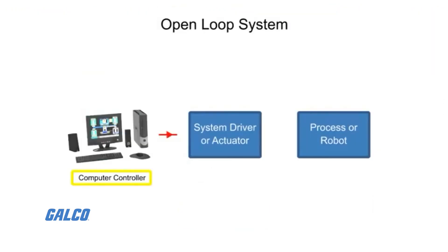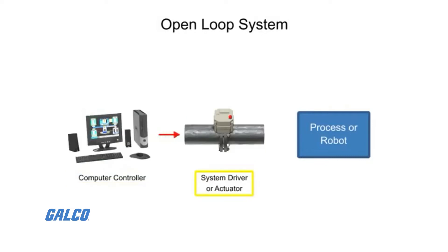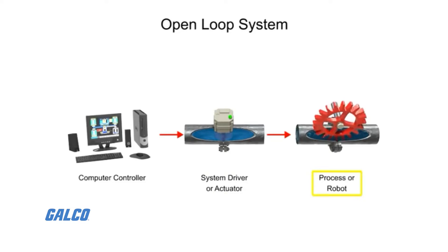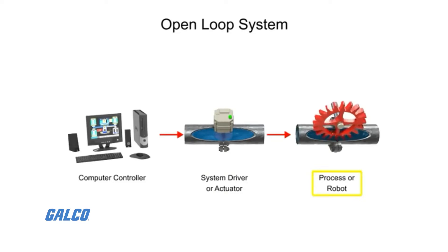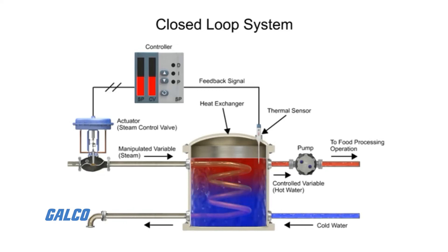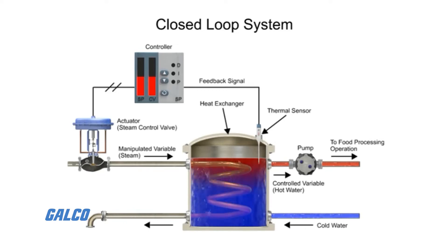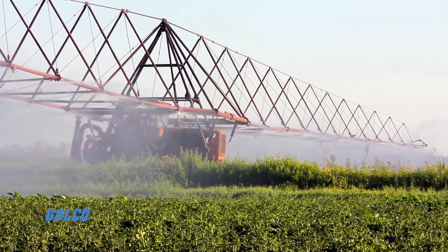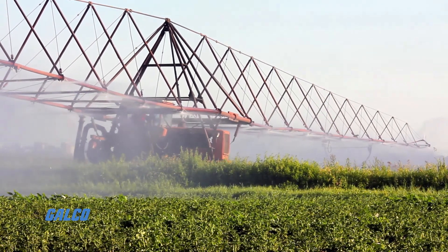Instead of using a shaft encoder to monitor position, the controller monitors the current and voltage from the motor. The biggest benefit of using closed-loop vector control is that it allows up to 200% of the motor's rated torque to be produced at 0 RPM.